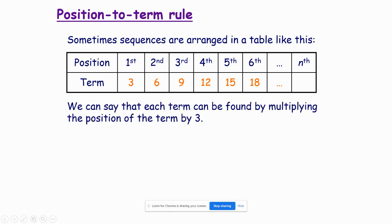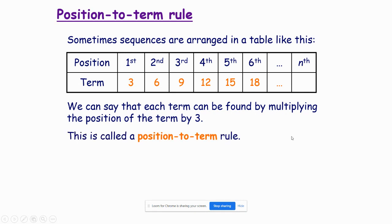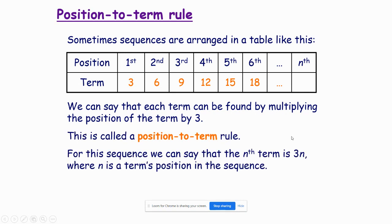We can find each one by multiplying the position by 3. One times 3 is 3, two times 3 is 6, three times 3 is 9, four times 3 is 12, five times 3 is 15, six times 3 is 18. If you know anything about algebra, three times n is 3n. And this is the important one which is going to tell us what we need to know for future sequences and future position-to-term rules.